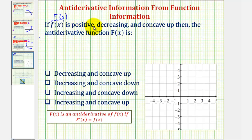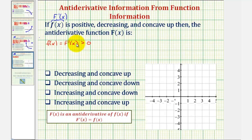So when we're told that f of x is positive, since f of x equals big F prime of x, that means big F prime of x would have to be positive, and therefore big F of x would be increasing. The sign of the derivative indicates whether our function is increasing or decreasing, and since the derivative here is positive, big F must be increasing.